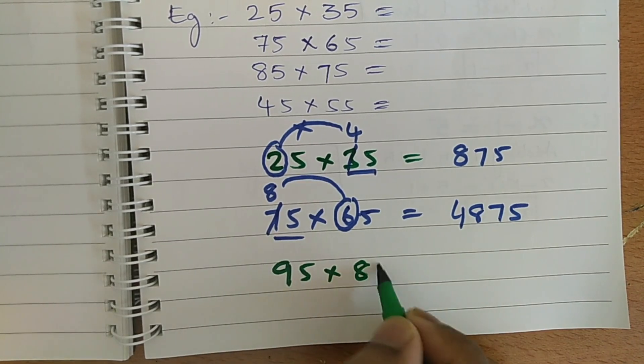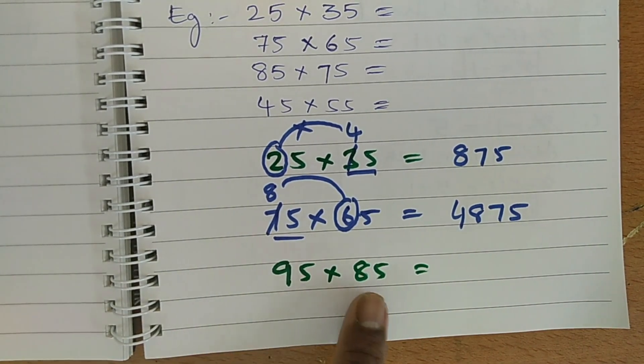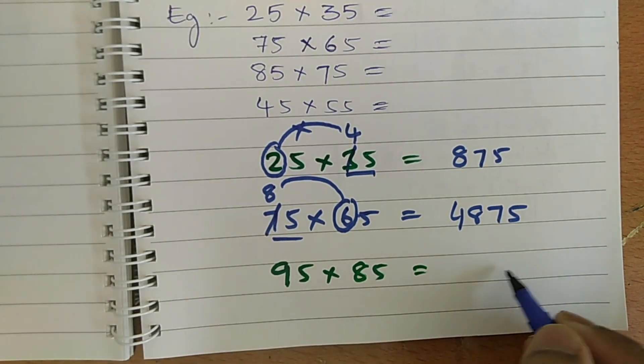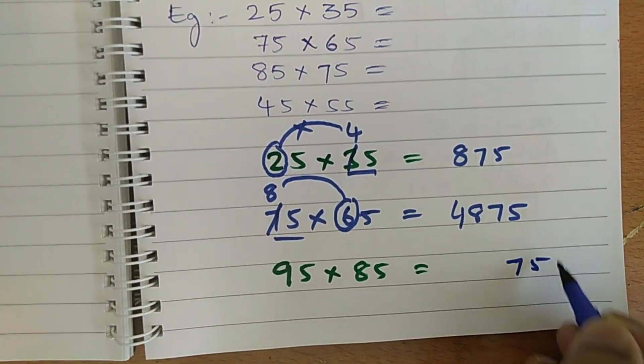Next, you can take here one more example, 95 into 85. Here base is 80, here base is 90, so continuous base is there. So, we can use this trick here. So, let us see, the first you should write here 75 at the end.